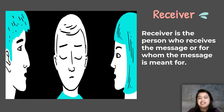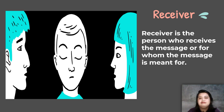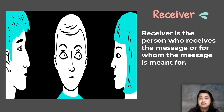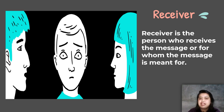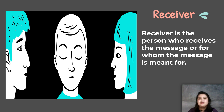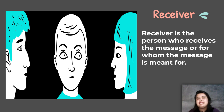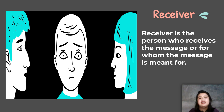Then we have the receiver. The receiver, as the name suggests, is the person who receives the message — or for whom the message is meant. We have to be careful because there are instances when multiple people are speaking at the same time, making it hard for the receiver to decode the message. So ideally, the receiver should only need to decode one message at a time.